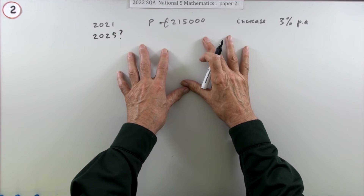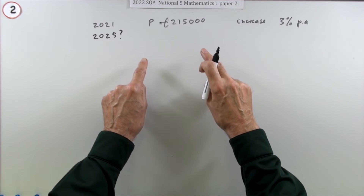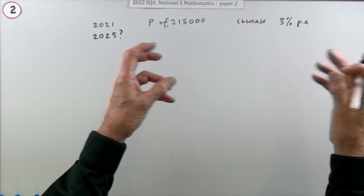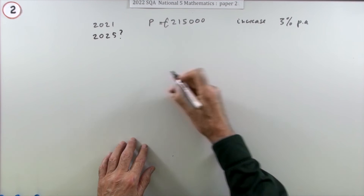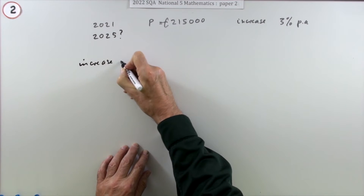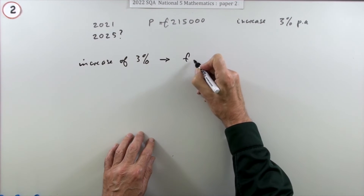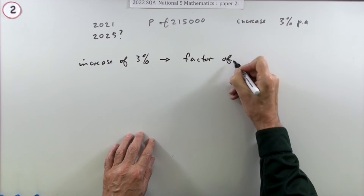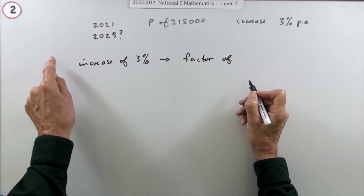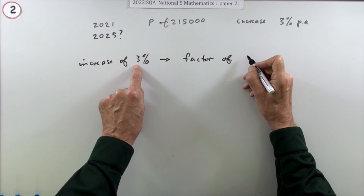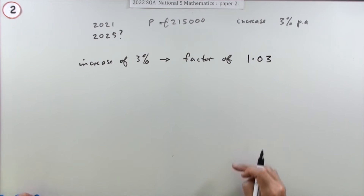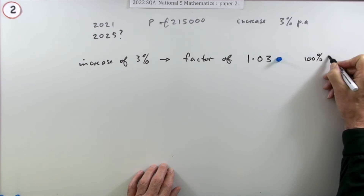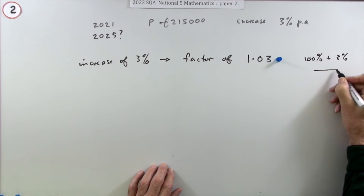There's a really long way to do that and a very short way. The short way is more accurate because you won't have rounding errors from keeping lots of intermediate figures. The short way — which is the best way — is simply this: if you've got an increase of 3%, that results from multiplying by a factor. 3% more means you now have 103%, which as a decimal is 1.03. Knowing to use a factor of 1.03 is the first mark — that's 100% plus 3%, which is 103 out of 100.